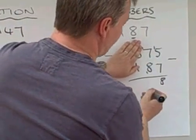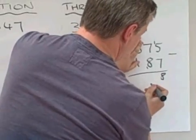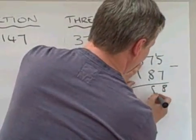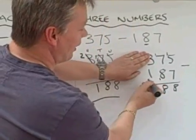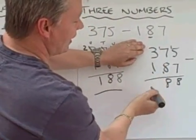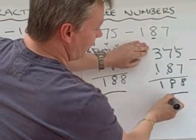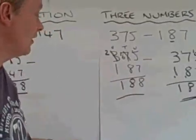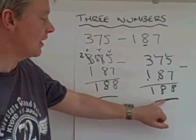8. And then I'm going to have to pay it back, and 3 take away 2 is 1. So I get the same answer, 188 and 188, but I just treat it slightly differently by paying back on the bottom line in much the same way that we've done with the other addition questions.